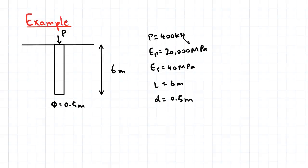So this load is 400 kilonewtons and the modulus of the pile is 20,000 megapascals. The modulus of the soil is 40 megapascals. The length of the pile is 6 meters and the diameter of the pile is 0.5 meters.